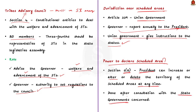Any order of the President relating to increase, alteration, or revocation of scheduled areas would also be done after consultation with the state governments concerned. Through this discussion, we learned about scheduled areas, what is meant by the term, the number of states in India having scheduled areas, and who can declare scheduled areas under Schedule 5.